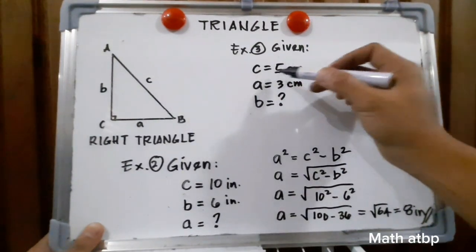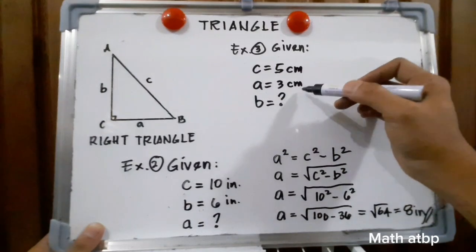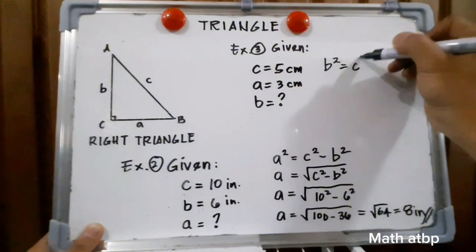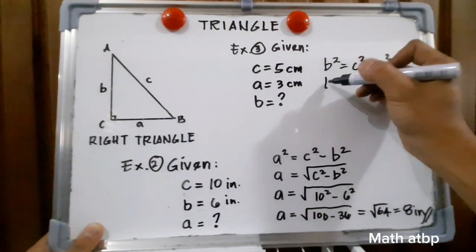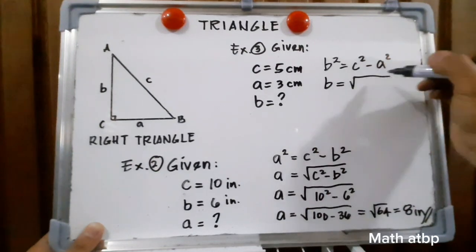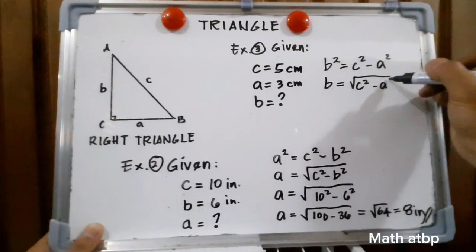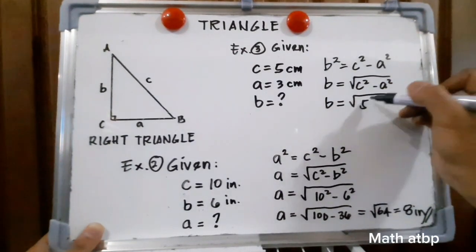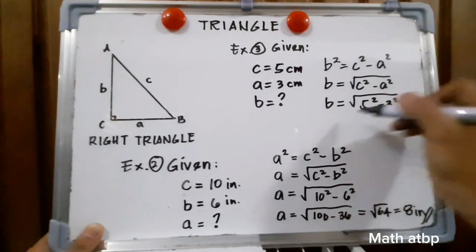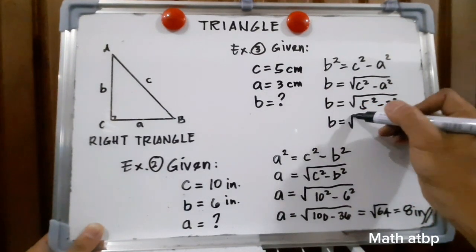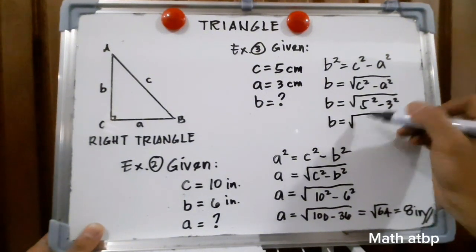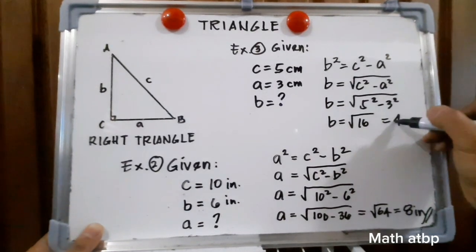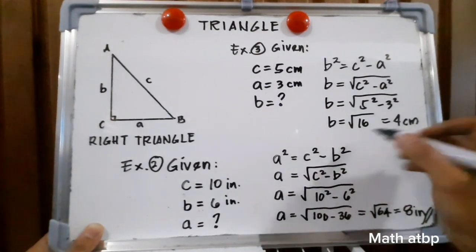Example number 3: given c is equal to 5 cm and side a is equal to 3 cm, we are going to find side b. We have b squared is equal to c squared minus a squared, so b is equal to the square root of c squared minus a squared. Substituting: b is equal to the square root of 5 squared minus 3 squared. 5 times 5 is 25 minus 9, giving us 16, and the square root of 16 is 4. So 4 cm is our side b.